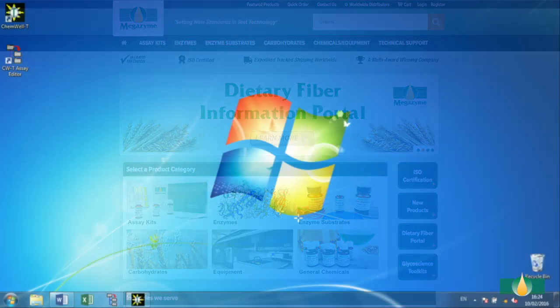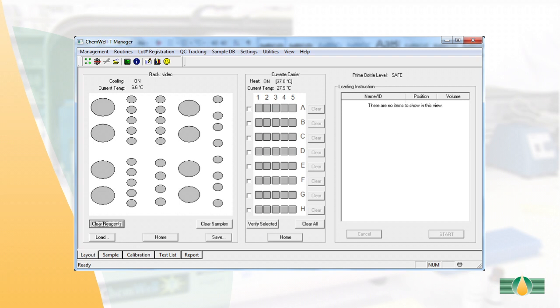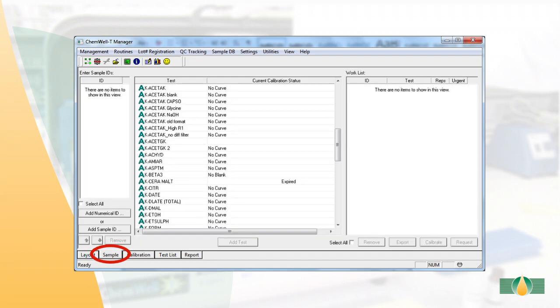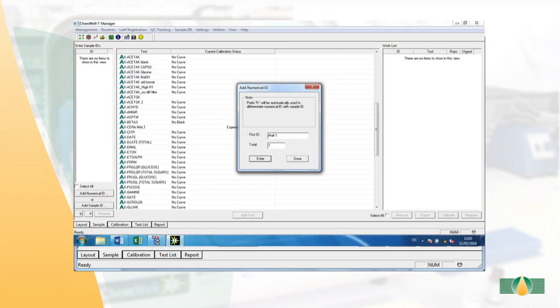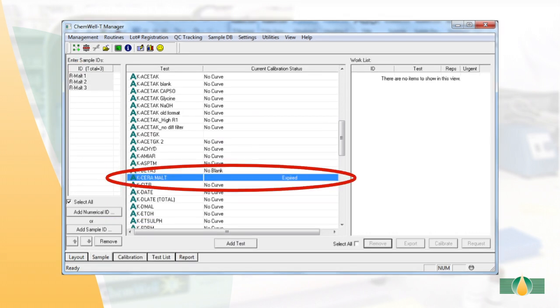To run the automated assay, open the ChemWell Manager software and select the sample tab. Select add numerical ID and input IDs for all samples. Highlight all samples to be tested and select the appropriate pre-loaded test file from the test list, then select add test.